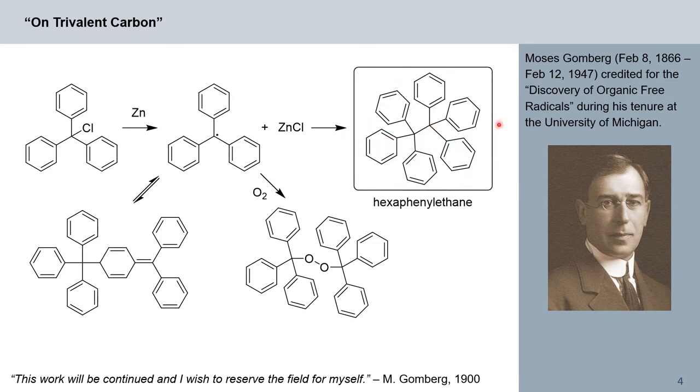So Moses Gomberg was trying to synthesize a carbon compound called hexaphenylethane, which you see here, a highly sterically demanding molecule of six phenyl groups attached to one central ethane backbone. So he recognized that he had found during his synthesis a long elusive free radical and showed that carbon is not always tetravalent. And like I said, this was a revolutionary find because tetravalent carbon was presumed to be the only state for carbon.